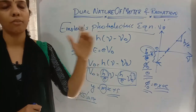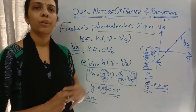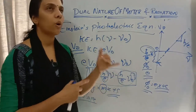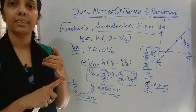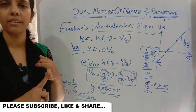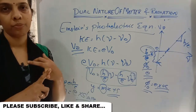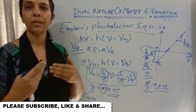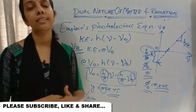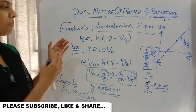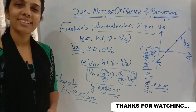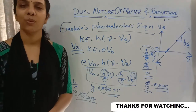To summarize today's class: Einstein's photoelectric equation is hν = φ₀ + ½mv². The four laws of photoelectric emission are: intensity depends on photo current; threshold frequency is the minimum frequency for emission; frequency determines stopping potential and kinetic energy; and photoelectric emission is an instantaneous process. In the next class we will do numericals. Please subscribe, like, and share — thank you for watching!